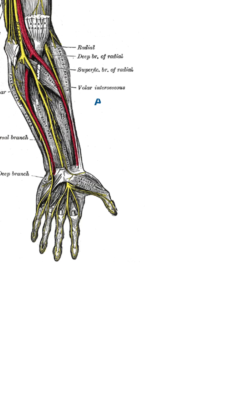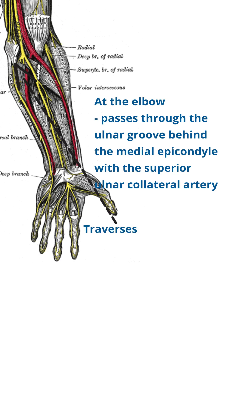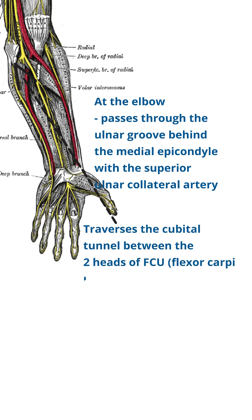At the elbow, it passes through the ulnar groove behind the medial epicondyle. It then traverses the cubital tunnel, entering the forearm between the two heads of FCU.